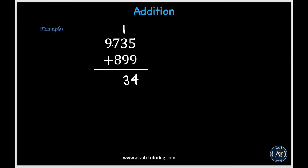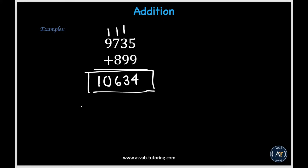And then 13 is also a double digit number, so we'll carry over the 1 to the hundreds place. And then we will be adding up 1 plus 7 plus 8 to get 16. Then we'll carry over the 1 once again and get 9 plus 1, which is equal to 10. So our answer turns out to be 10,634.